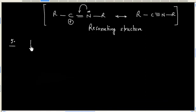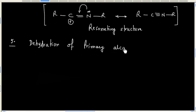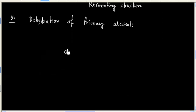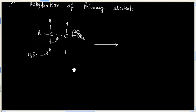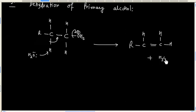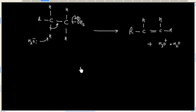Another example is dehydration of a primary alcohol. This is a one-step reaction. In the case of a primary alcohol, bond breaking and bond forming occurs in the same step, and finally we will have an alkene. This is also a concerted reaction.